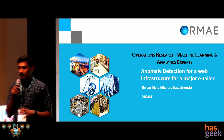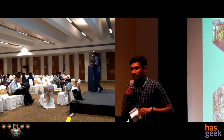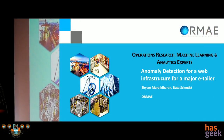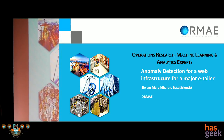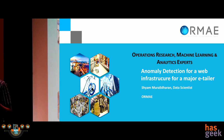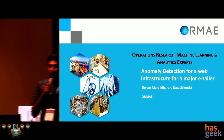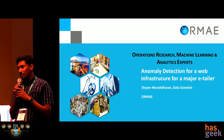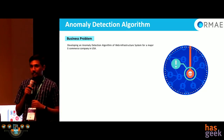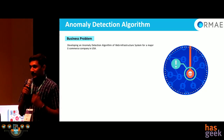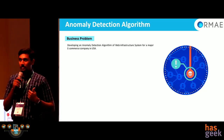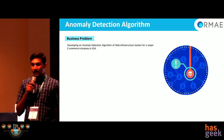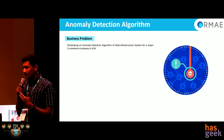Good evening. I'm here to talk about a project we recently completed — anomaly detection in web infrastructure. Our business problem was to identify why there was an anomaly or variation in response time, or an order drop, and how it correlated with server metrics and response codes. This was for a major U.S. e-tailer. The velocity and veracity of the data was quite high — we dealt with datasets close to 12 GB, around 8 million records for one quarter.